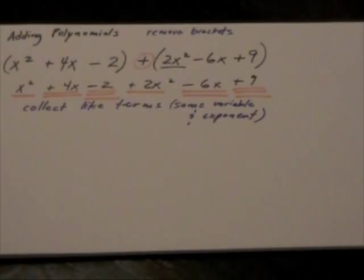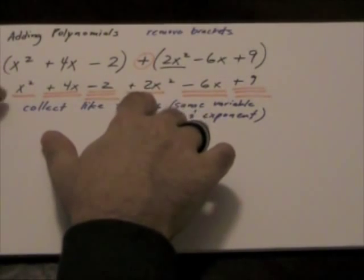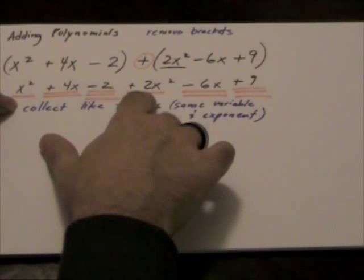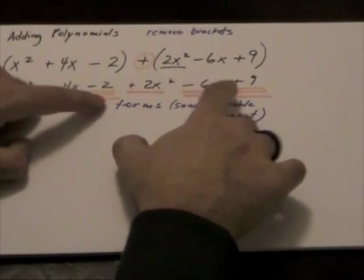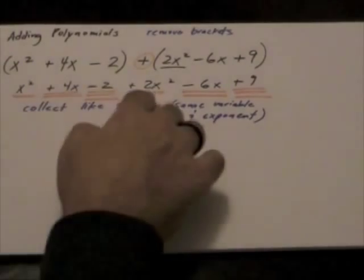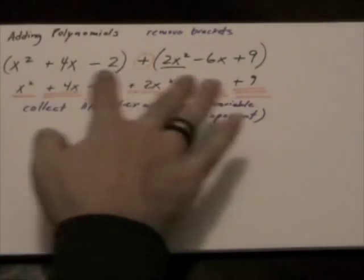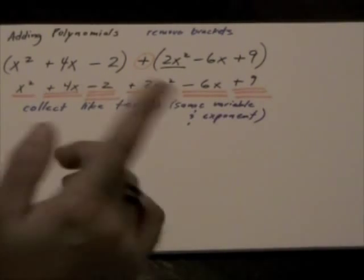So what we're going to do is we're going to rewrite this and notice here how I underlined the like terms. So one underline for one set of like terms, two lines for a second set of like terms and three lines for my third set of underlines. So what I'm going to do is I'm going to collect all my single lined, all my double lined, and all my triple lined terms.